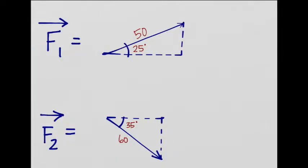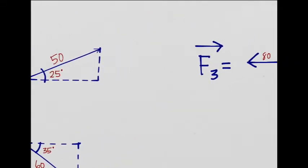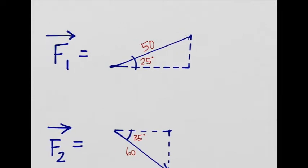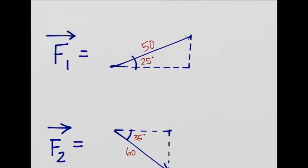Here we have F1, F2, and F3. First, let's do F1. You know the Y will be sine and the X will be cosine, so let's type those values in. X is 50 cosine of 20.